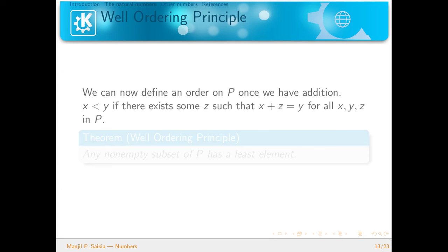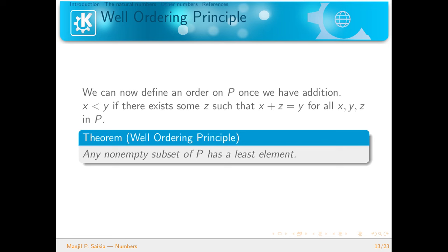We now define an order on P once we have addition. We say x ≤ y if there exists some z such that x + z = y, for all x, y, z in P. This is very obvious for natural numbers — for example, 3 < 5 because z = 2 and 3 + 2 = 5. The well-ordering principle says that any non-empty subset of P has a least element. For example, if P is the set of natural numbers the least element is 1, and if P is the set of whole numbers the least element is 0.